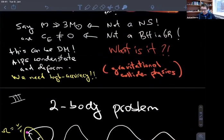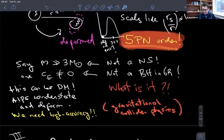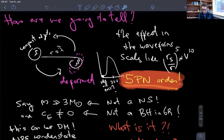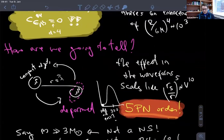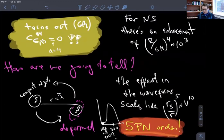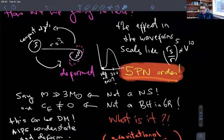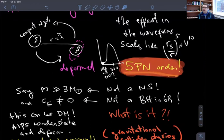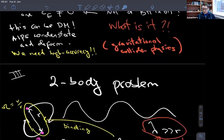We already determined that we need to go to high precision in the two-body problem to see the effect of the UV physics — what we call the tidal love number — which very interestingly vanishes for black holes, but also gives us a handle on the equation of state of neutron stars. So possibly we need to get to at least 5PN and maybe even higher order.